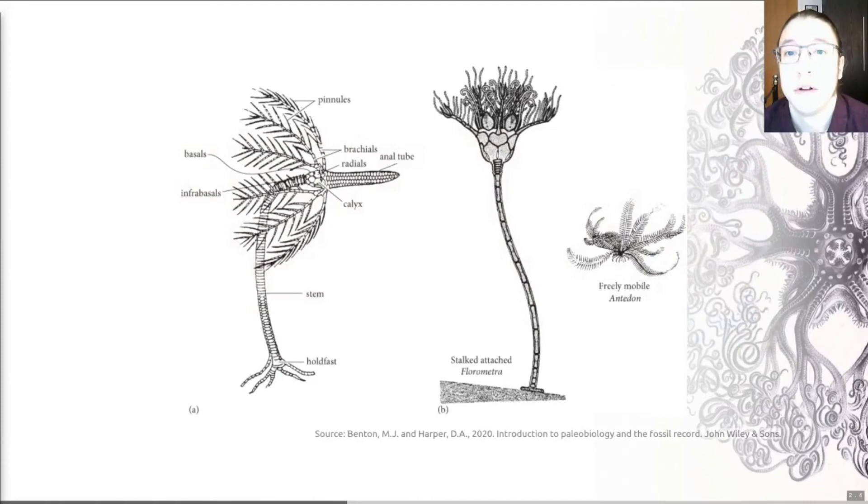Crinoids comprise a segmented stalk or stem composed of things called columnals or ossicles. You'll often hear people referring to crinoid ossicles as components of limestones. The stalk is fixed to the seabed by a root-like structure called the holdfast, as you can see labeled on this diagram. So stem comprising ossicles, holdfast at the bottom. Attached to the top of the stem is the main functional part of the animal, and the bit holding this is called variously the calyx, the aboral cup, or the theca. Sorry about this, that's three words that mean exactly the same thing.